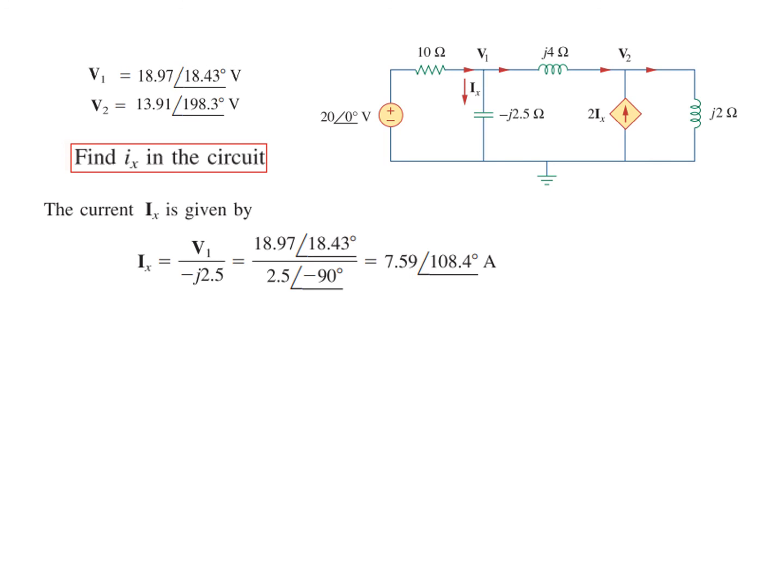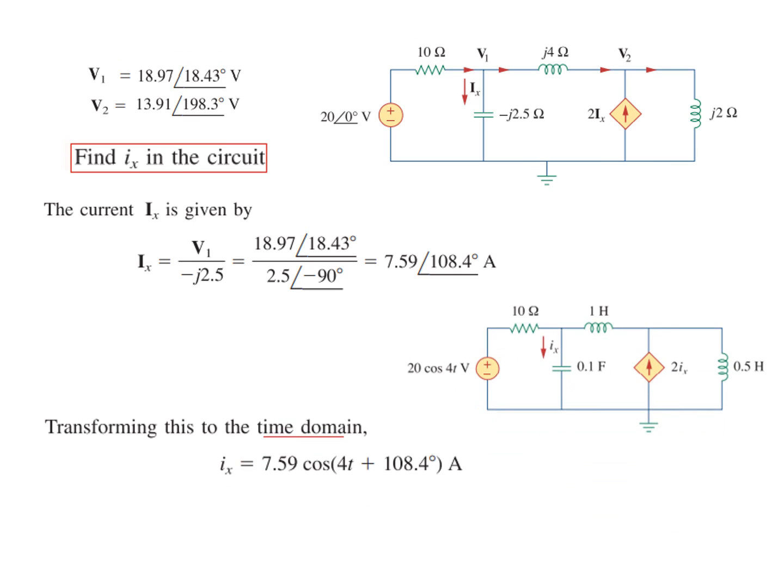For time domain, we write in the form of cosine. We can write this as magnitude cosine 4t plus this angle. So this is the answer, and the circuit in time domain—we have found the current in time domain. I hope this gives you an understanding of how to solve this type of question. Thank you.